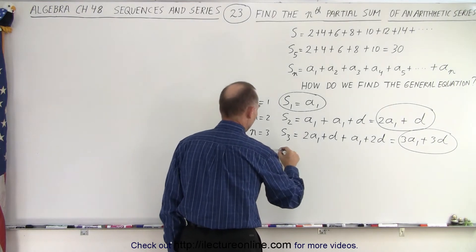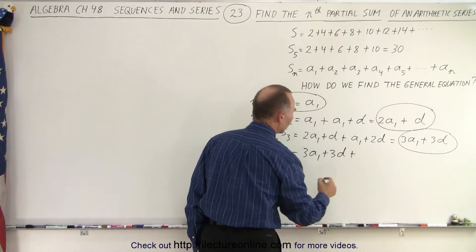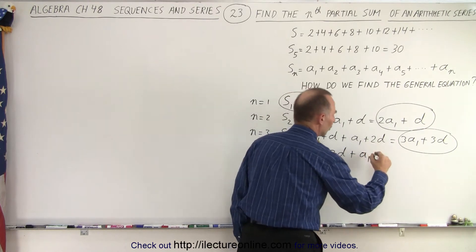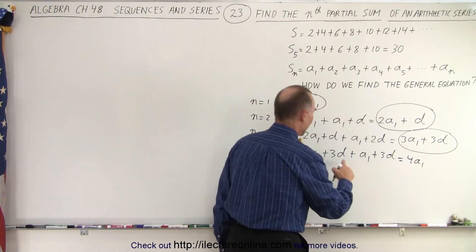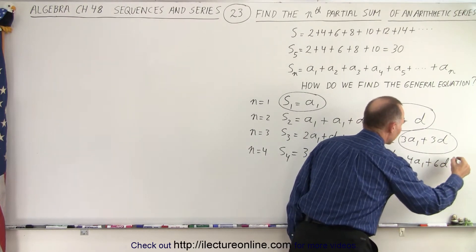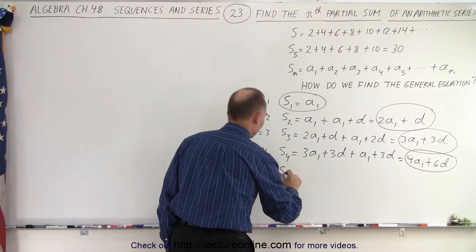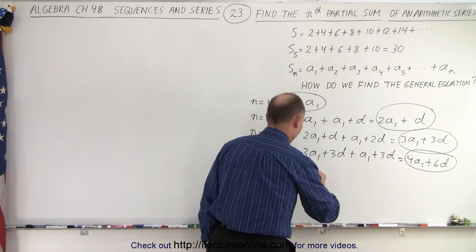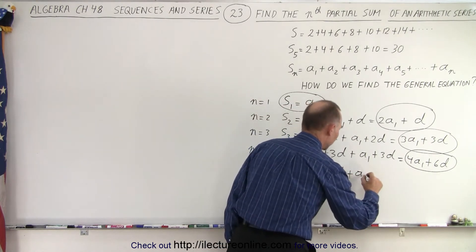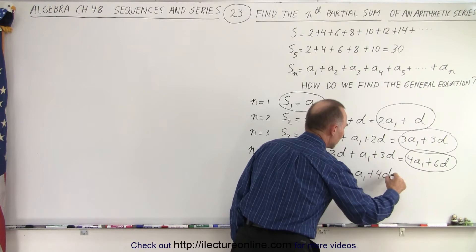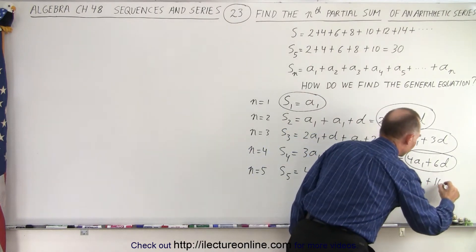When n is equal to 4, S sub 4 equals S sub 3 plus the next term: 3a sub 1 plus 3d plus a sub 1 plus 3d, giving us 4a sub 1 plus 6d. When n is equal to 5, S sub 5 equals 4a sub 1 plus 6d plus a sub 1 plus 4d, which gives 5a sub 1 plus 10d.